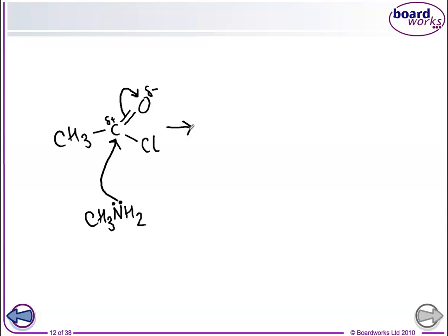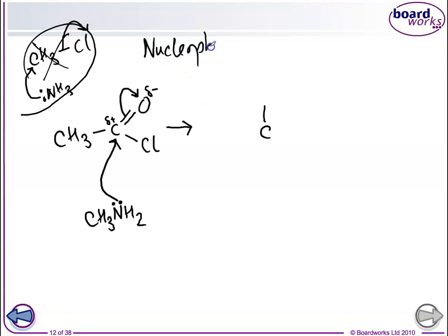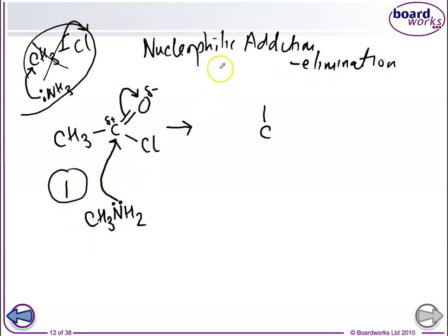This step is the same as any nucleophilic attack on a carbon, whether nucleophilic substitution or nucleophilic addition. Compare it to haloalkanes: chlorine is more electronegative, takes the electrons, and then a nucleophile like ammonia attacks the delta-plus carbon. This first step — the nucleophile attacking — is the addition step of the nucleophilic addition-elimination mechanism.